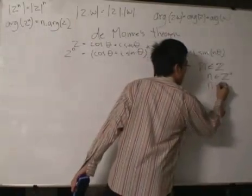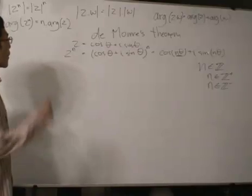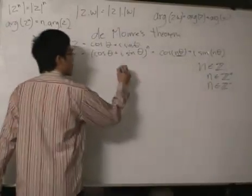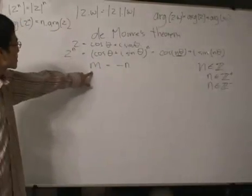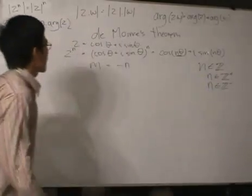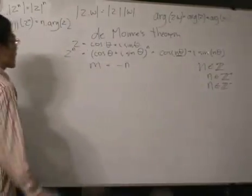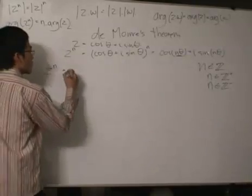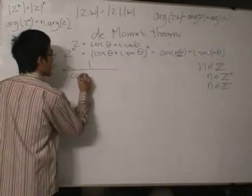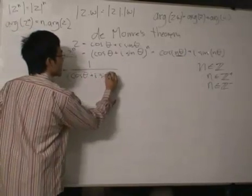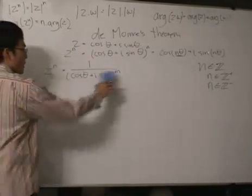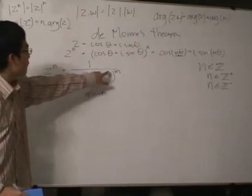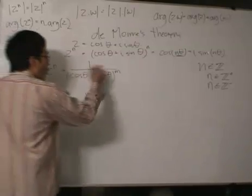Now let's say n is a negative integer. If n is in the set of negative integers, we write minus n and denote it m, so m is now a positive integer. We can write z to the n as one over cosine theta plus i sine theta to the power of m. Since m equals minus n, this is cosine theta plus i sine theta to the power of minus n, which equals one over cosine theta plus i sine theta to the power of n.